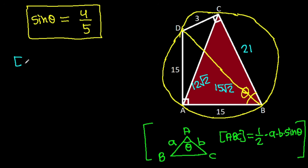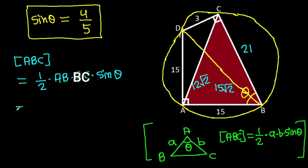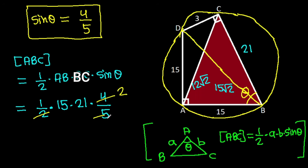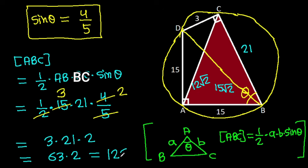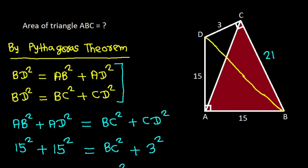The area of triangle ABC = ½ × AB × AC × sin(theta) = ½ × 15 × 12√2 × (4/5). This simplifies to ½ × 15 × 12√2 × 4/5 = 3 × 4 × 21/2... evaluating: (15 × 12√2 × 4) / (2 × 5) = 63 × 2 = 126. So the area of triangle ABC is 126.